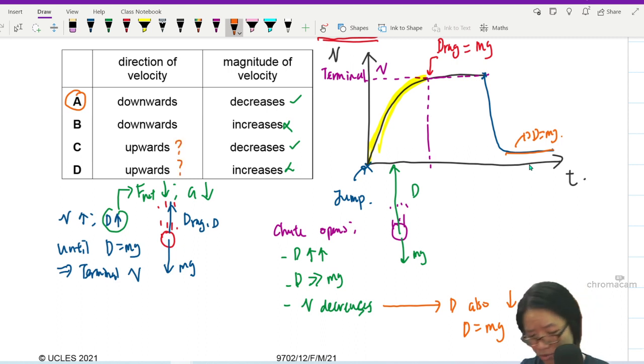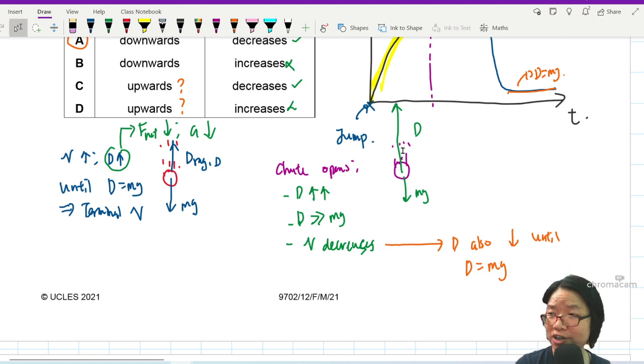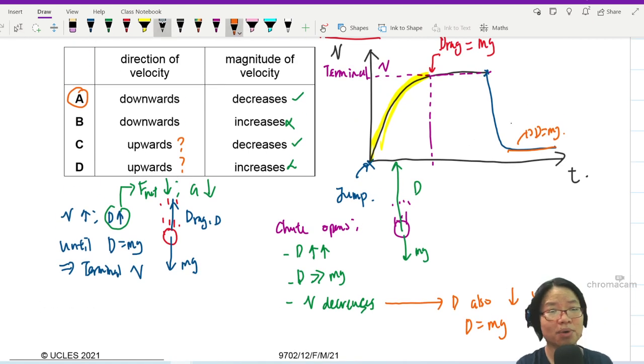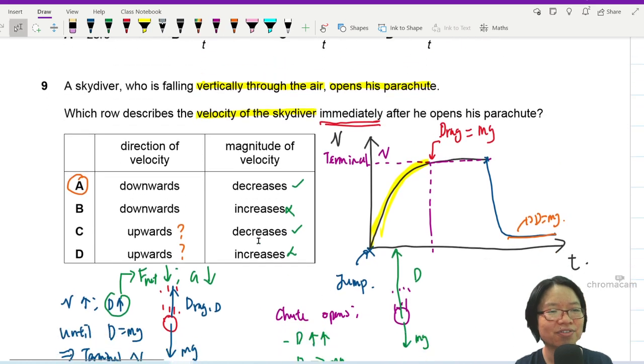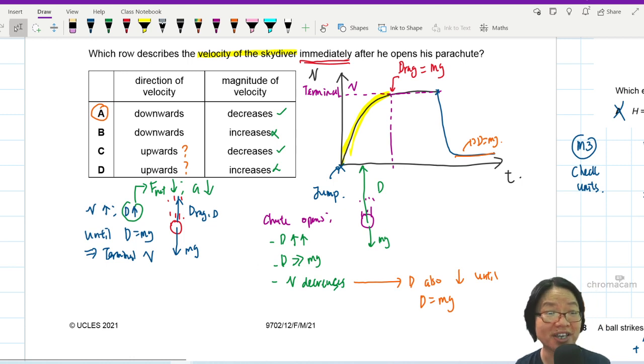For you to fall upwards, your drag force would have to maintain so the velocity drops to negative. Only this part here would be upwards, which is very weird. So that's it for question nine, skydiver. Whenever they ask you this kind of concept question, you have to ready your brain.